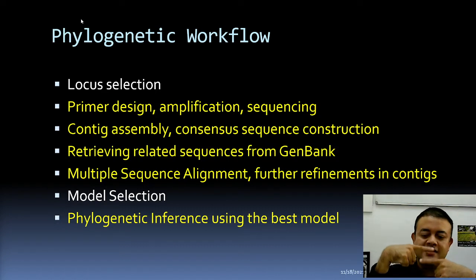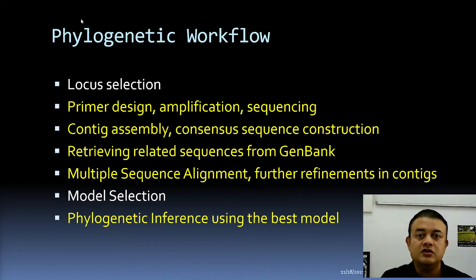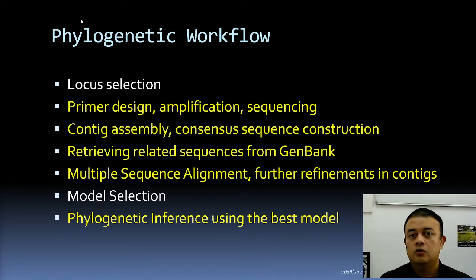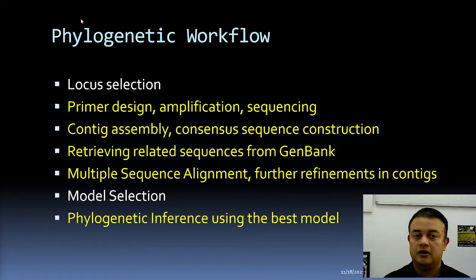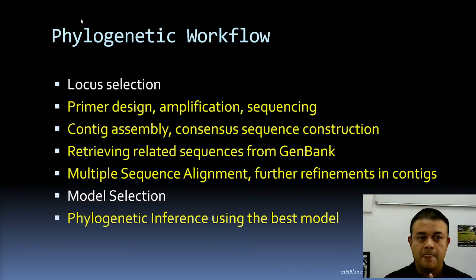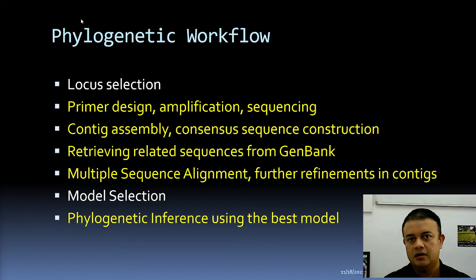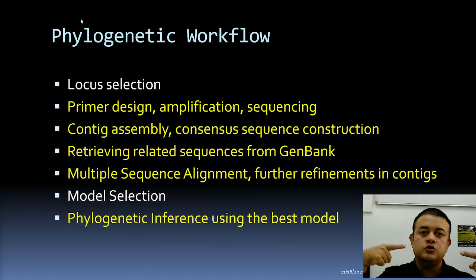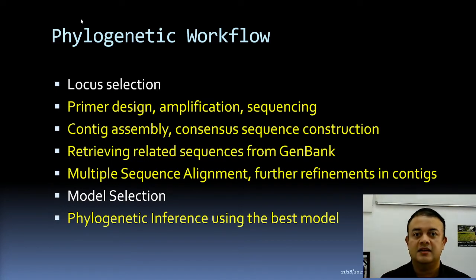To assemble the reads, you need to find the overlapping region — if there is no overlap, you cannot assemble. This is what contig assembly is about. It's like a jigsaw puzzle: take a political map of India, cut it randomly, then reassemble by matching patterns and colors. You need some reference overlap, and once assembled you can read the complete stretch to make one consensus sequence.